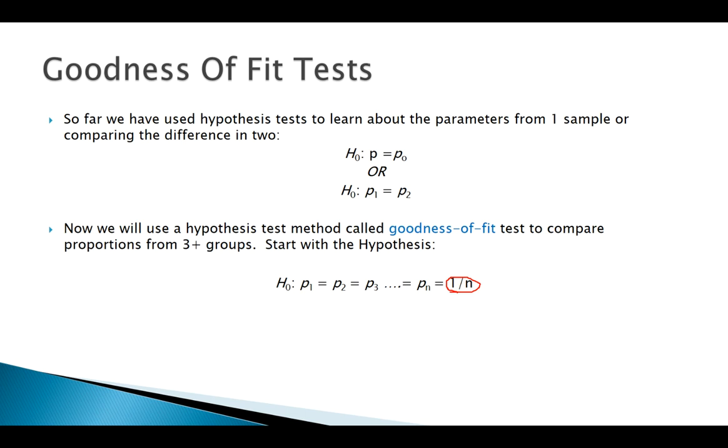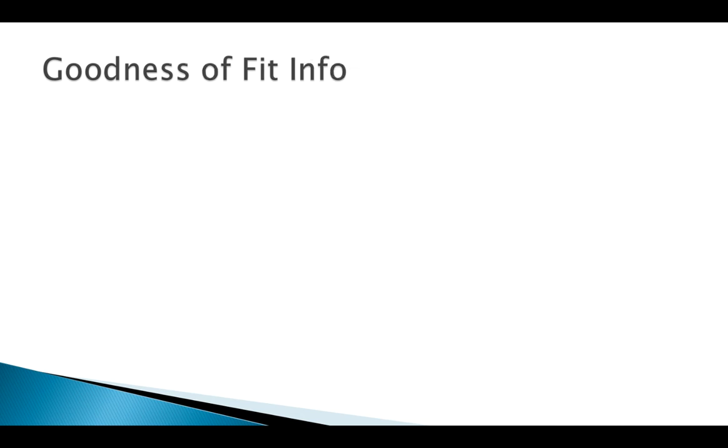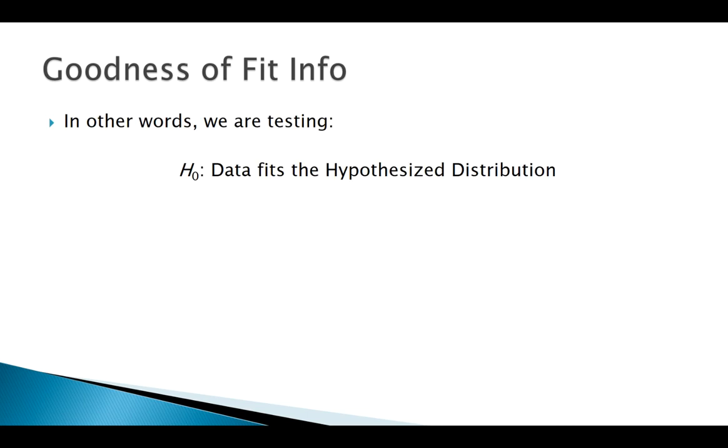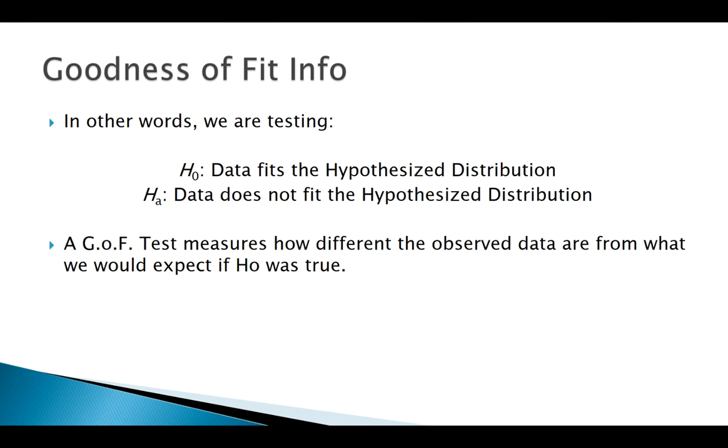On the other hand, the alternative for a goodness of fit test would be that each of these groups are not equal. A little bit more about our goodness of fit test here. Basically what we're testing is the null that our data fits some hypothesized distribution pretty well, or at least it appears to. The alternative is that it does not fit that hypothesized distribution.